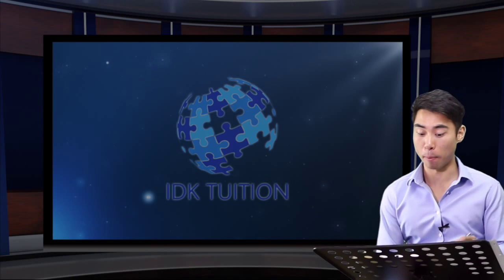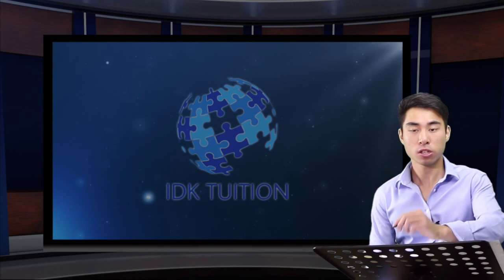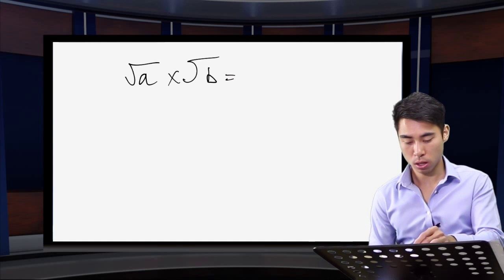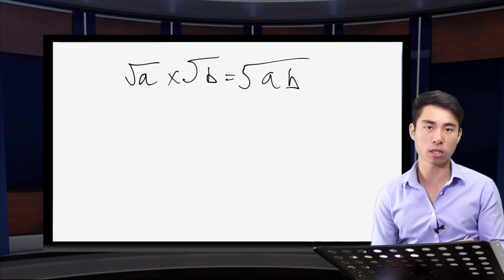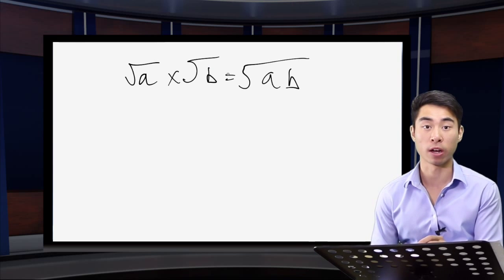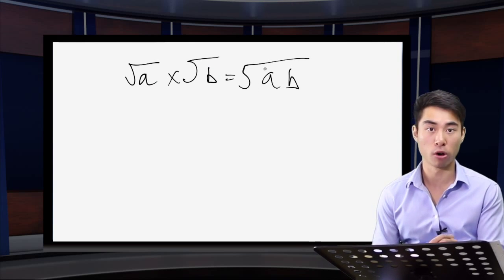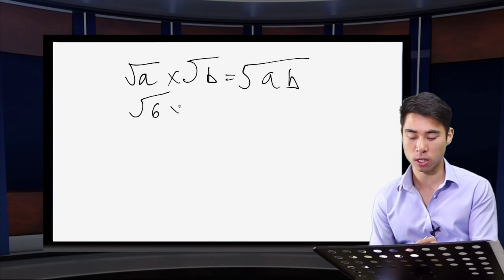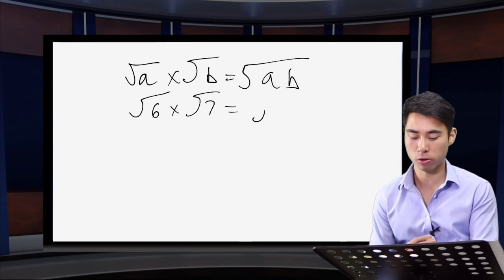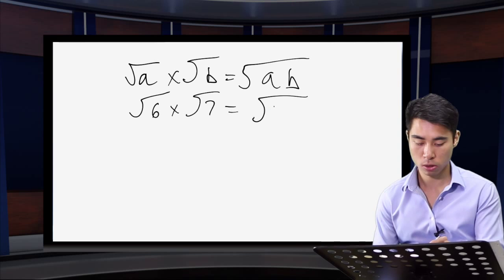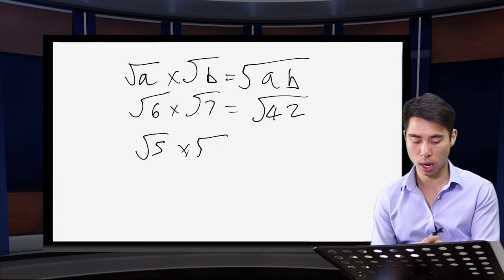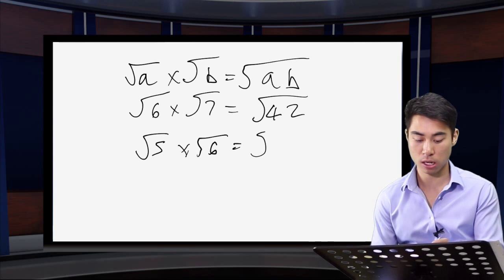The second rule concerns breaking down big surds. If I have the square root of a number multiplied by the square root of another number, it's the same as the square root of the product of those two numbers. So the square root of 6 times the square root of 7 is the same as the square root of 42. Another example: the square root of 5 times the square root of 6 — 5 times 6 gives me 30, so that's the square root of 30.